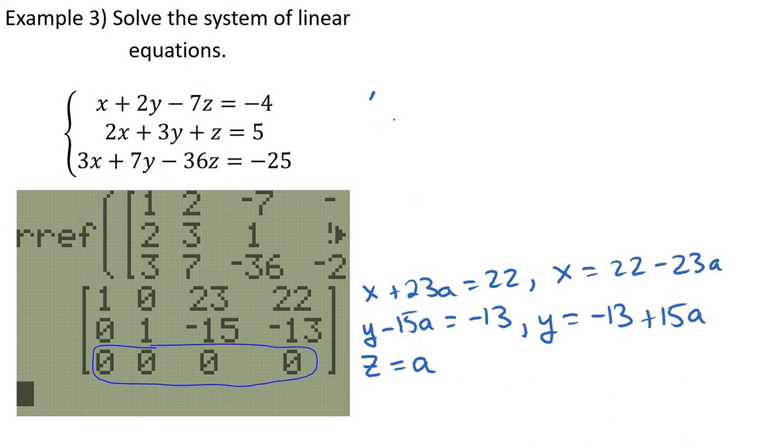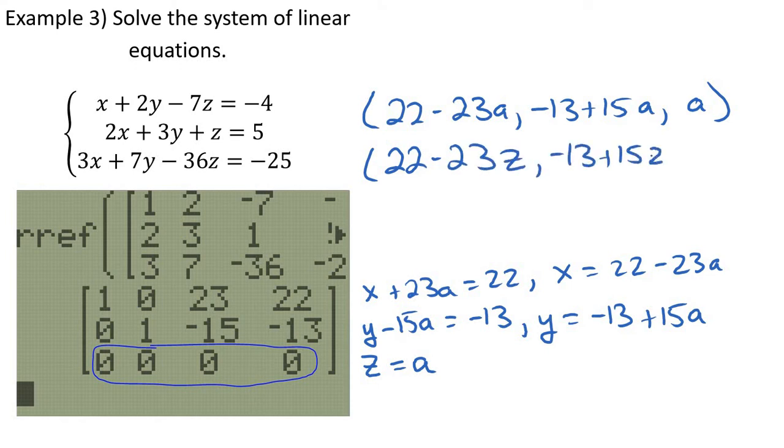Let's put all that together, write my solution. So 22 minus 23a is my x value. Again, it could be anything, but it depends on what I plug in here for my a value, doesn't it? y is negative 13 plus 15a. And finally, z I'm saying is anything, z could be a. Again, an alternate way we could write that, if I just left z as z, this would be 22 minus 23z, negative 13 plus 15z. And then of course z I'm saying is anything, and then these other two values depend on that. Both are common ways that I've seen these solutions written.